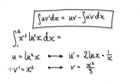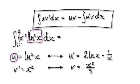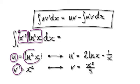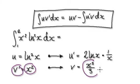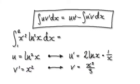To do this, we're going to let (ln x)² be our u, and x² be our v prime. If u equals (ln x)², then u prime equals (2 ln x)/x. And if v prime equals x², then v equals x³/3.